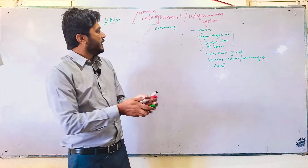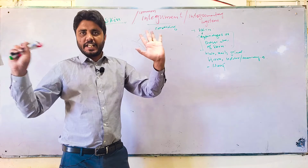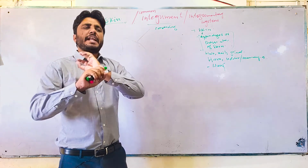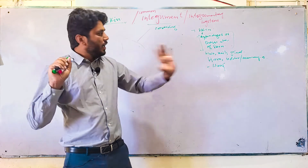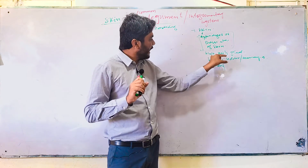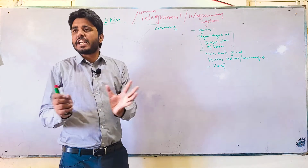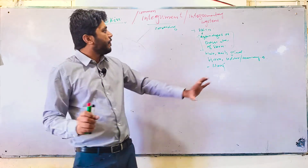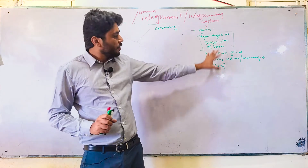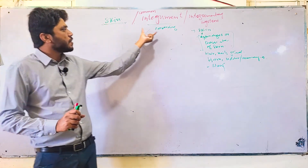So skin is a single organ — the largest organ of the body — involving many important functions. But along with its derivatives and appendages like hair, nails, glands, horns, and hooves, together they form the integumentary system. That is the difference between the integumentary system and skin or integument alone.